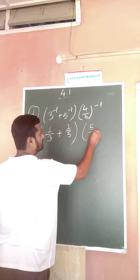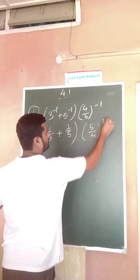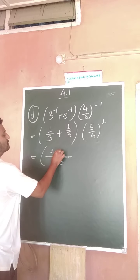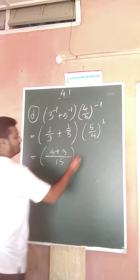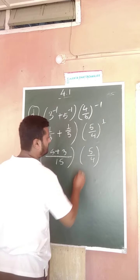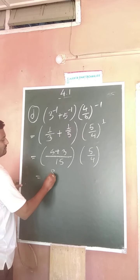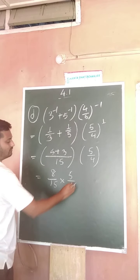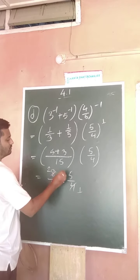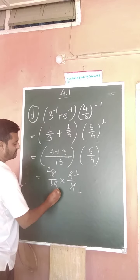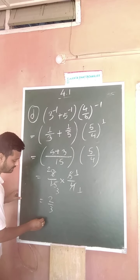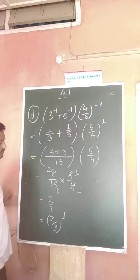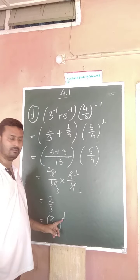You can write it like this. Now take the LCM which is 15, so 5 plus 3 gives 8 over 15. This one is 5 by 4, and 4 to the power 1 means 1. So 8 by 15 into 5 by 4 — when you cancel it becomes 2 by 3. In terms of exponent you can write 2 by 3 to the power 1, which means the exponent is a positive number.